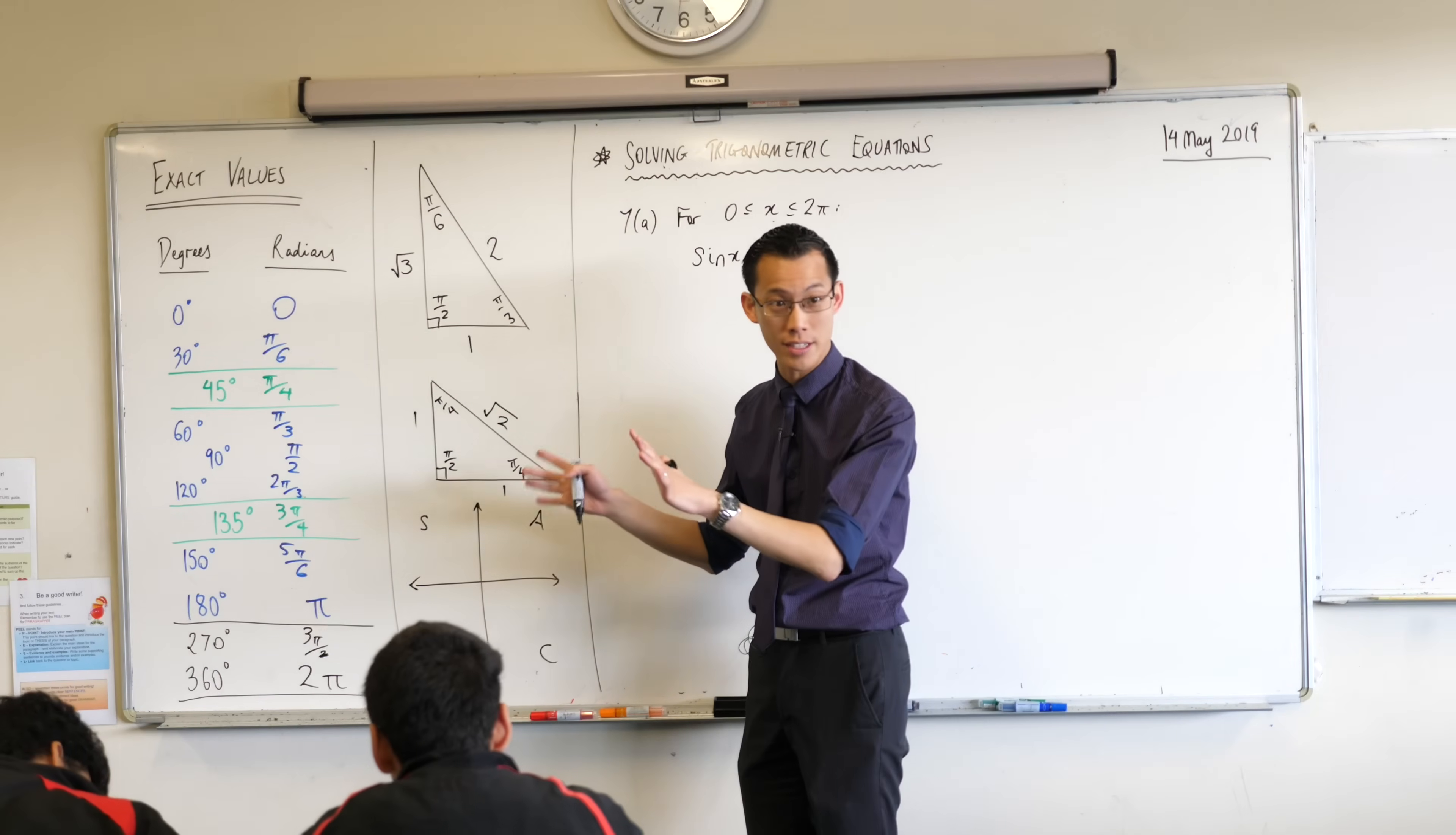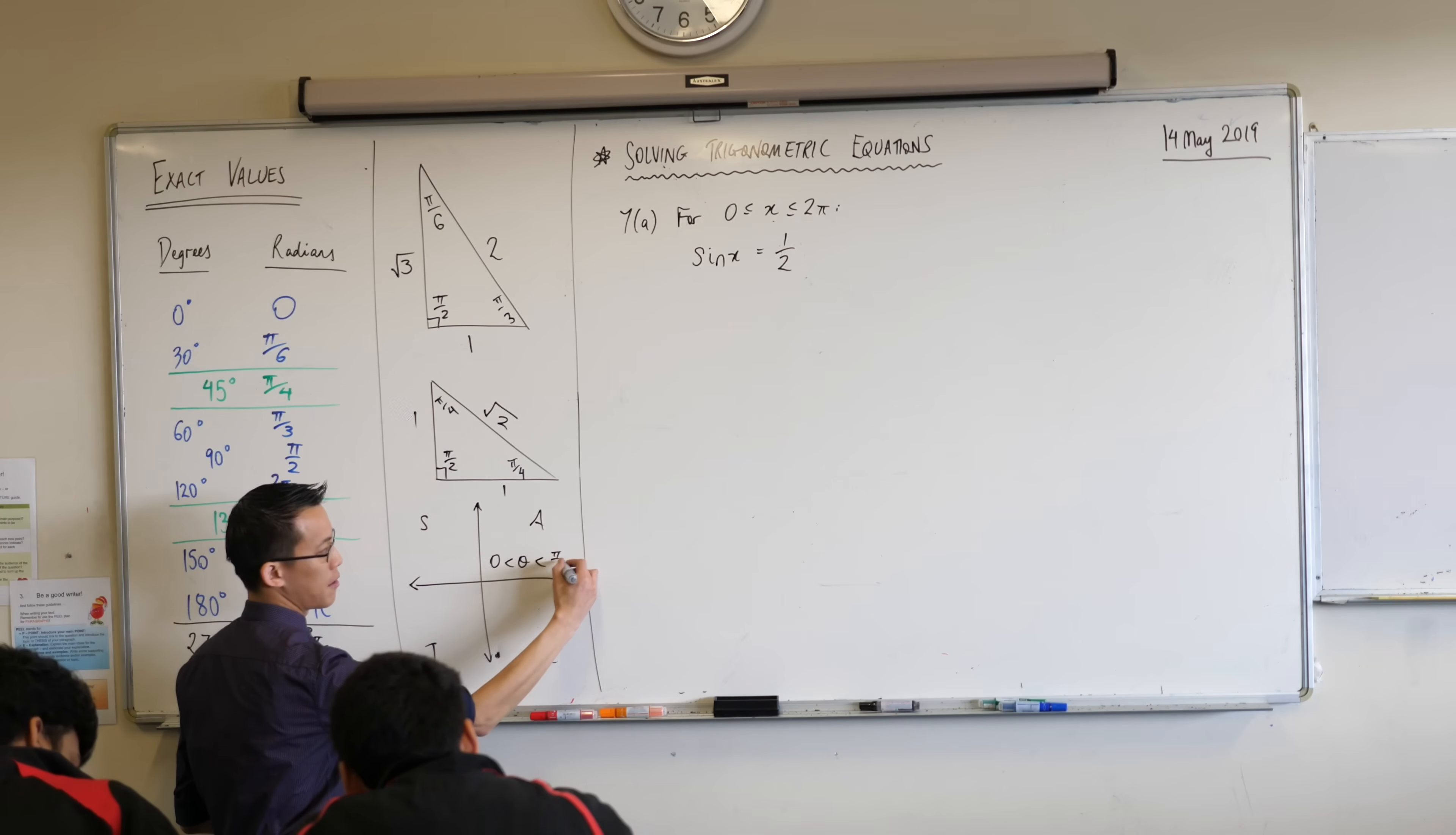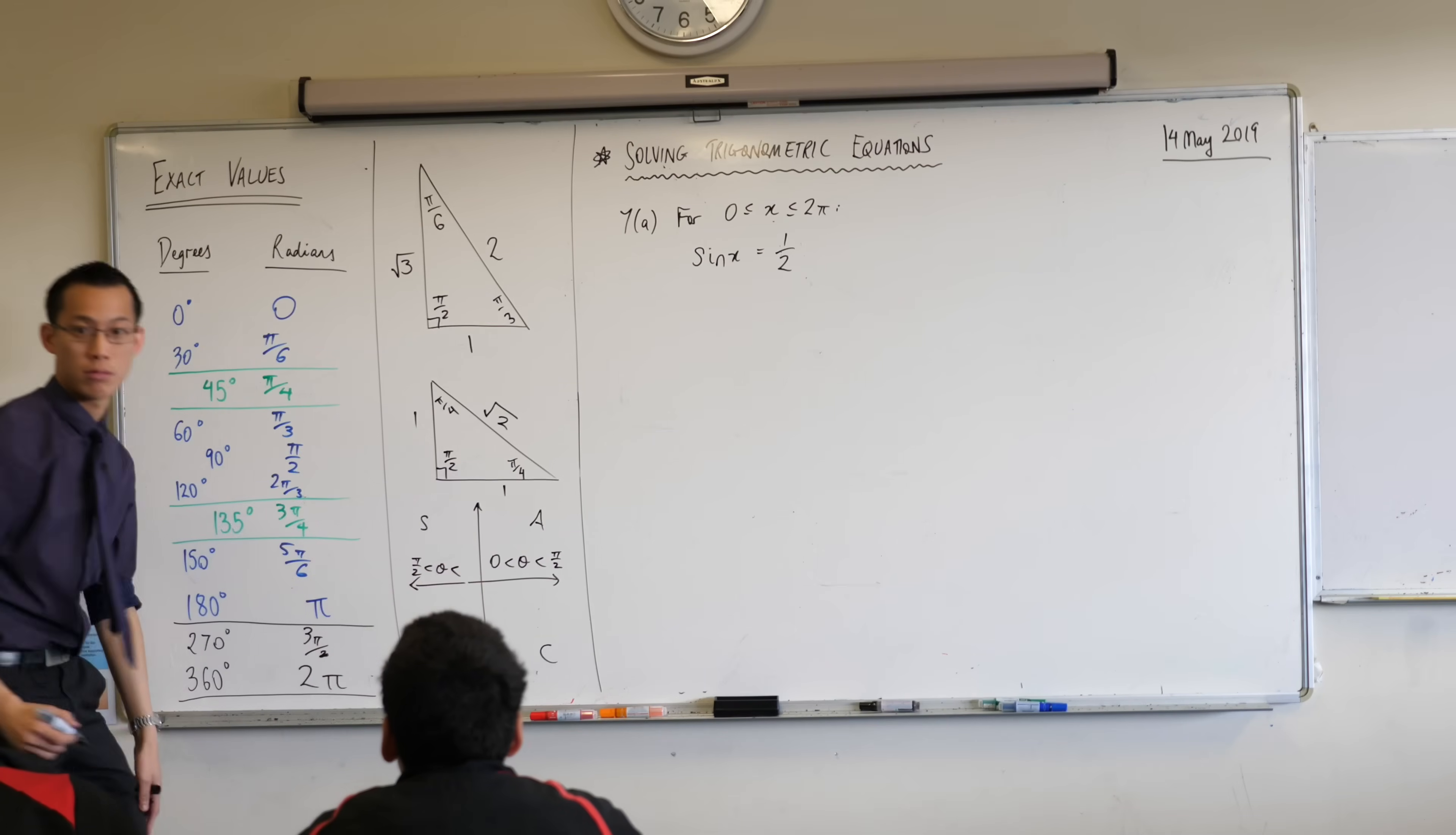I'm going to say 0 to π/2. So in this quadrant I'm going to write 0 is less than theta, I could call it x, is less than π/2. That's the range of angles you can have in there from 0 to π/2 radians. When you go over here into obtuse angles we would say that's between 90 and 180 but I'm not going to say that because I'm in radians. Instead I'm going to say π/2 all the way up to π.